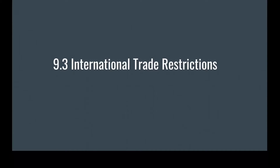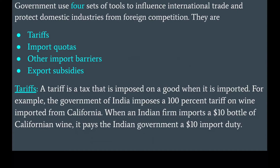9.3 International Trade Restrictions. Governments use four sets of tools to influence international trade and protect domestic industries from foreign competition: tariffs, import quotas, other import barriers, and export subsidies.